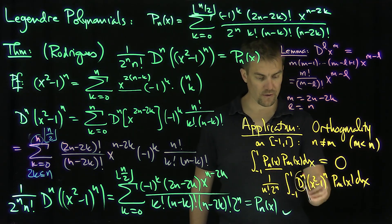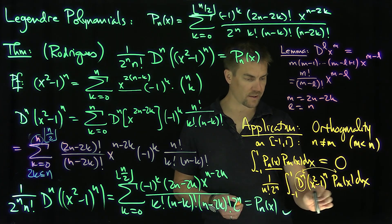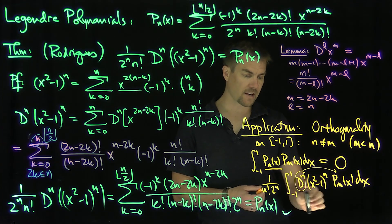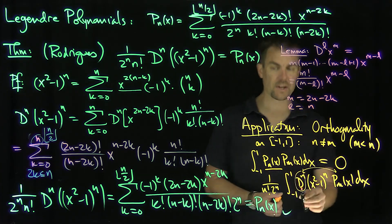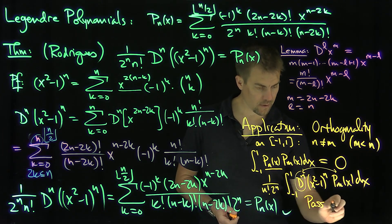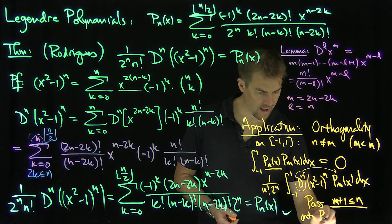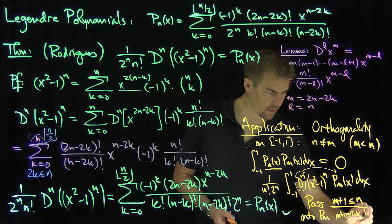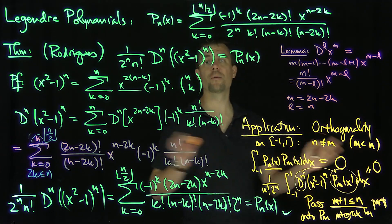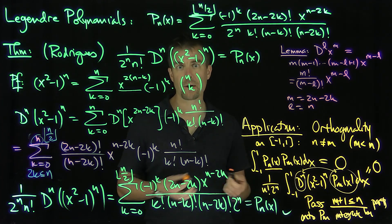Every time we integrate by parts, we move a derivative from one function onto the other. When we look at the boundary limits — plugging in either 1 or negative 1 — we get 0 because x squared minus 1 vanishes at 1 and negative 1, and so do any of its derivatives, which makes all boundary terms vanish. By passing m plus 1 derivatives — which is at least n — onto Pm via integration by parts, taking m plus 1 derivatives of Pm gives 0. This proves that the Legendre polynomials are orthogonal on the interval negative 1 to 1 with respect to the Lebesgue measure.